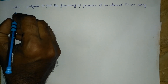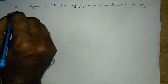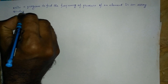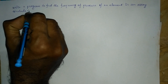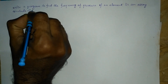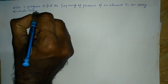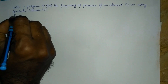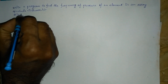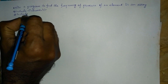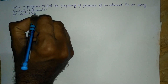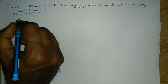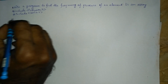Let us begin with the preprocessor directives. Hash include, in the angular brace, I am going to write iostream.h header file. The next preprocessor directive is hash include conio.h header file.